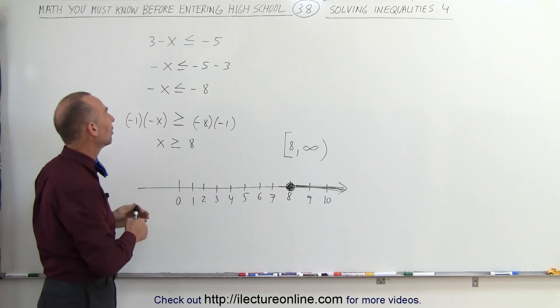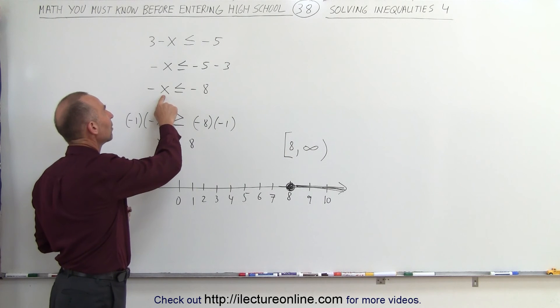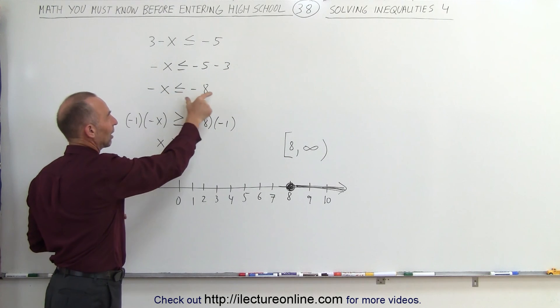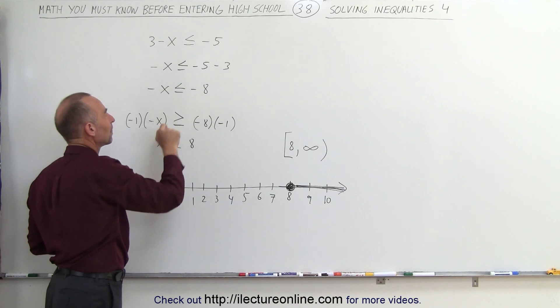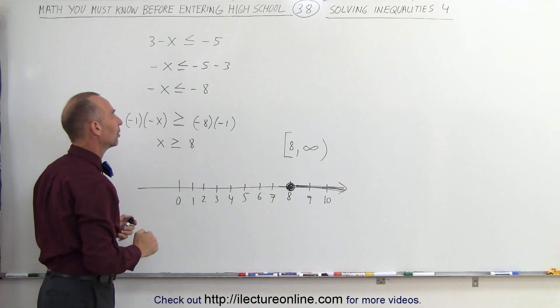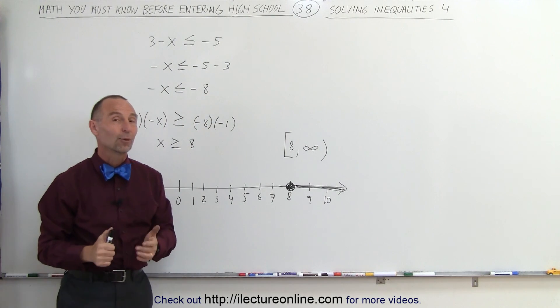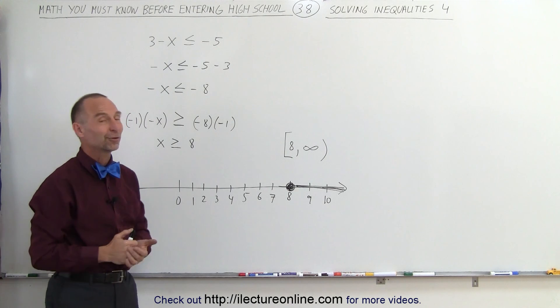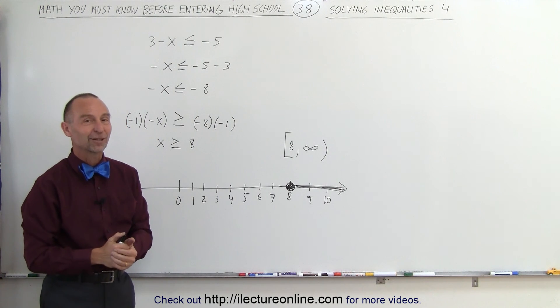But again, the important thing is, if you want to turn this into a positive and multiply by negative 1, of course you have to do the same thing to both sides. Then you must flip the inequality symbol around. So be careful when you do that, otherwise you won't get the right answer. That's how it's done.